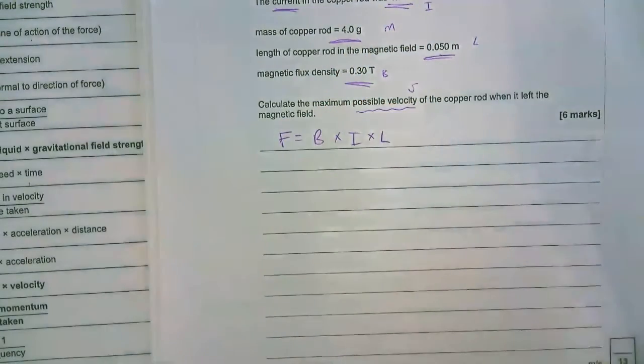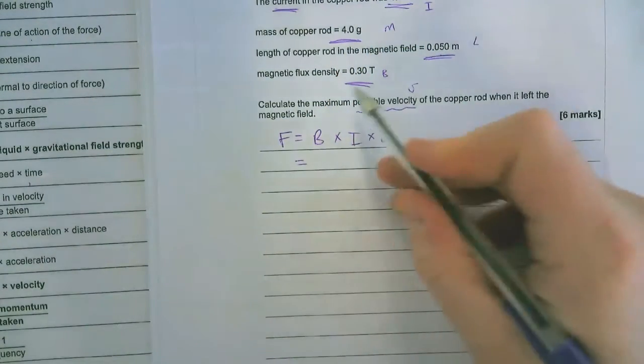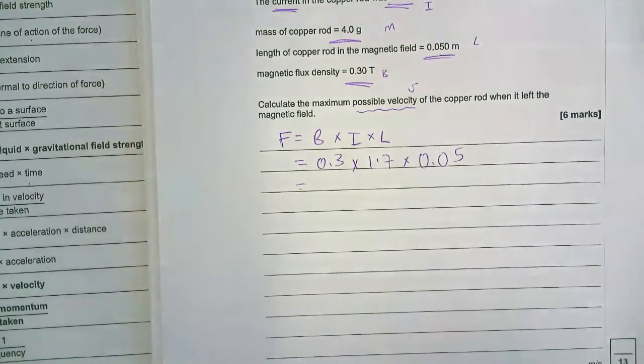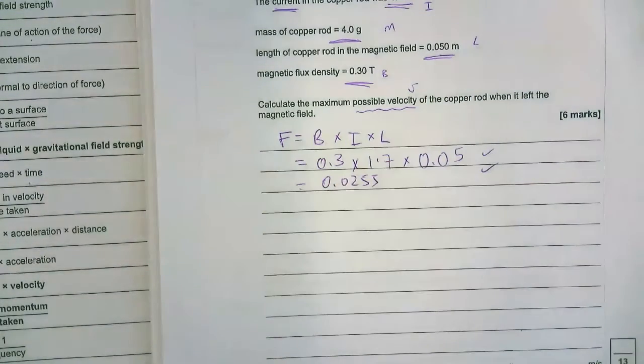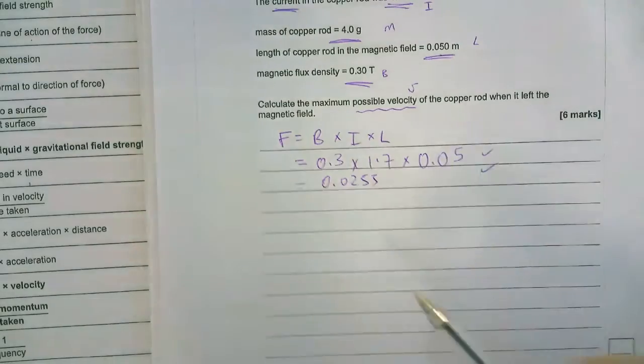So we're going to multiply three numbers together, and it's going to give us an answer of 0.0255 newtons. That's two marks already in the bag out of the six.